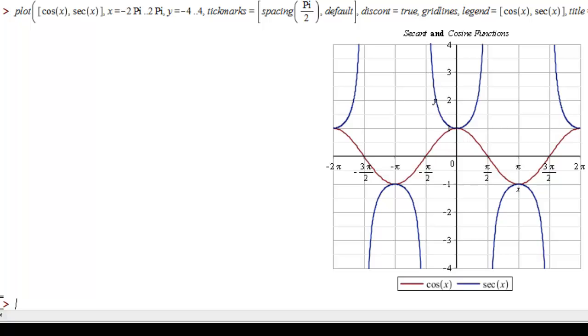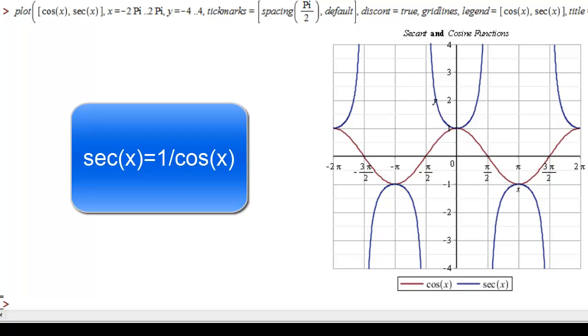So one thing this graph demonstrates is that the secant function is actually the reciprocal of the cosine function. So secant of x is 1 over the cosine of x. And you can see that because when cosine is 1, so is secant, but as cosine gets smaller and smaller, closer to 0, the secant function gets larger and larger, which is the sort of pattern you expect from reciprocals.